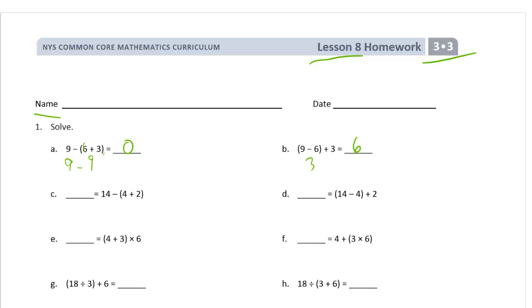So the idea is if you don't do this right, if you don't pay attention to parentheses, you can get two different answers. Because here you have 9 minus 6 plus 3 and here you have 9 minus 6 plus 3. But depending on where the parentheses are, you can get two different answers.